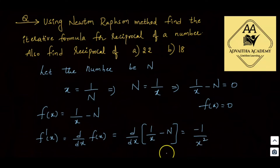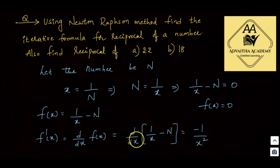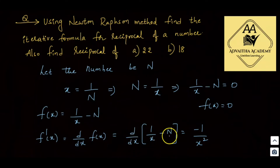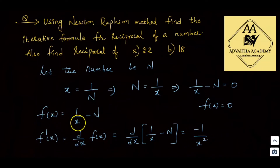The derivative: d/dx of 1 by x is minus 1 by x squared. The second term is n, which is a constant number, so d/dx of a constant is 0. Therefore, f'(x) is equal to minus 1 by x squared. We now have both f(x) and f'(x).